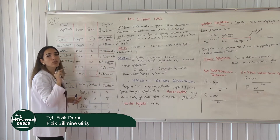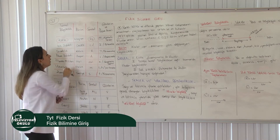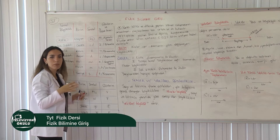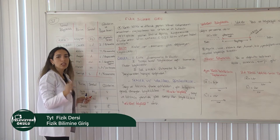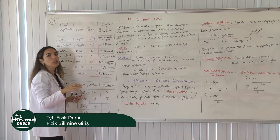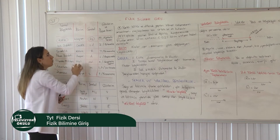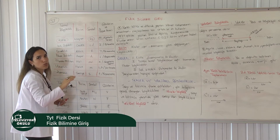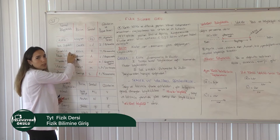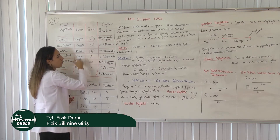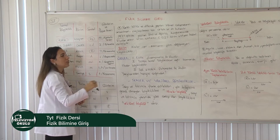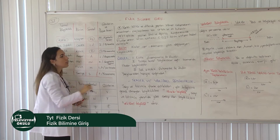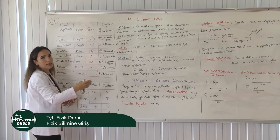Işık şiddetinin birimi kandeladır, Cd ile gösterilir. Işık şiddetini kitaplarda büyük I harfi ile görür ve tanırız. Işık şiddetini fotometre ile ölçeriz. Sıcaklık, uluslararası birim sistemine göre Kelvin'dir. Biz genel olarak santigrat derece yani Celsius kullanıyoruz, ama uluslararası birim sisteminde Kelvin'dir. Büyük K harfi ile gösterilir, kitaplarda sıcaklık büyük T harfi ile ifade edilir. Sıcaklığı termometre ile ölçüyoruz.